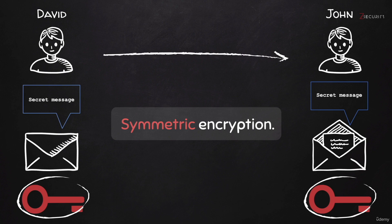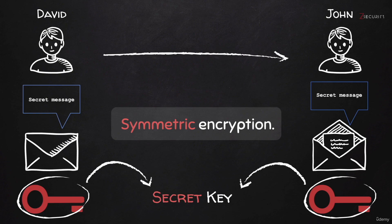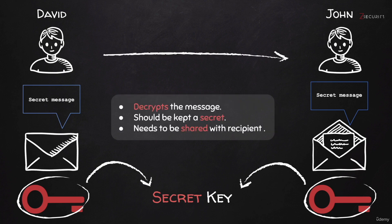This key needs to be private — that's why it's known as a secret key — because anybody who manages to get their hands on this key will be able to decrypt any message that David sends to John and vice versa. The secret key can be used to decrypt the messages, so it should be kept secret. But David somehow has to share it with John and anyone else he wants to communicate with. This is a major flaw with symmetric encryption, because the key has to be secret but at the same time has to be shared, and sharing it with more people increases the attack surface.